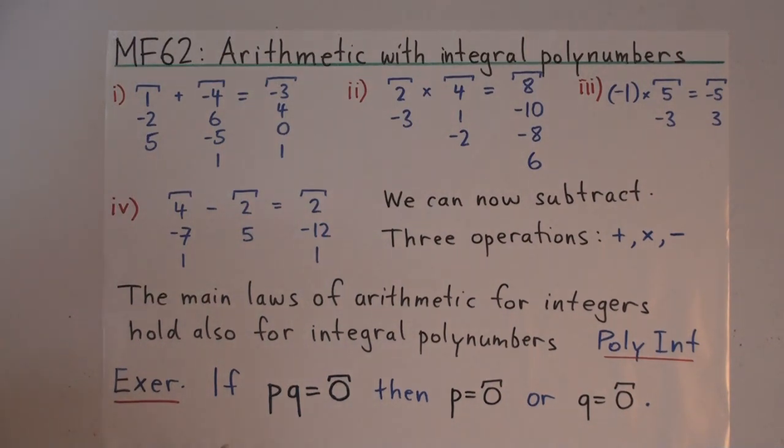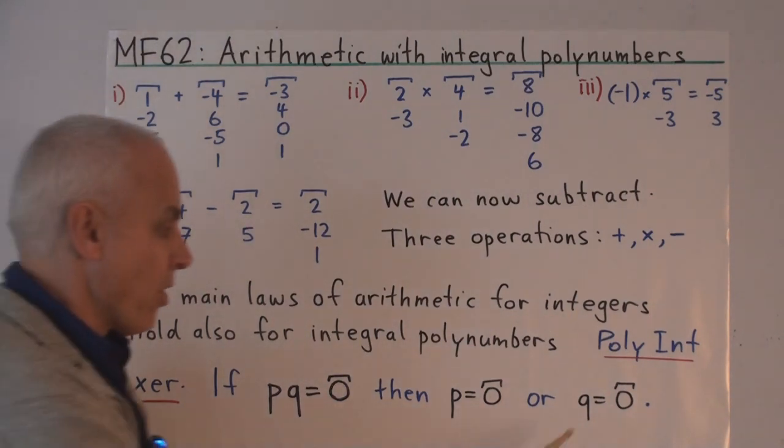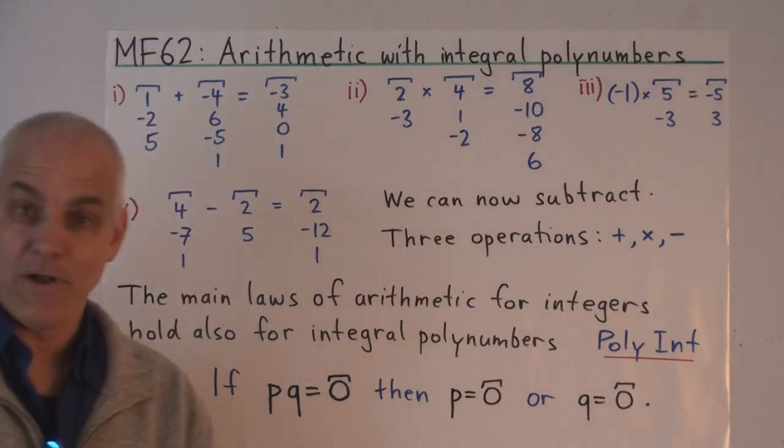Here's a nice little exercise that if the two polynumbers P and Q have the property that their product is the zero polynumber, then either P is the zero polynumber or Q is the zero polynumber.